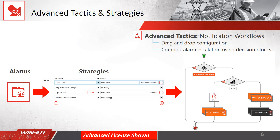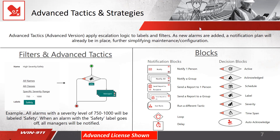In this scenario, if the alarm comes in and is active, we can make a decision: does this alarm have a tag for WTP storage tank? Yes — go this way. No — go this way. If yes, does it have a severity above 750? Yes — call out the WTP operators and the managers. No — wait two minutes and call the operators. So it is a visual flowchart of your escalation path. This slide covers a few more options for advanced tactics and strategies. You have blocks that you can make decisions on — you can notify certain people, groups, do call-outs based on labels, severity, time delays, and acknowledgments. The advantage of using advanced tactics is you can do these state machine type flowcharts, with more options for your escalation paths.